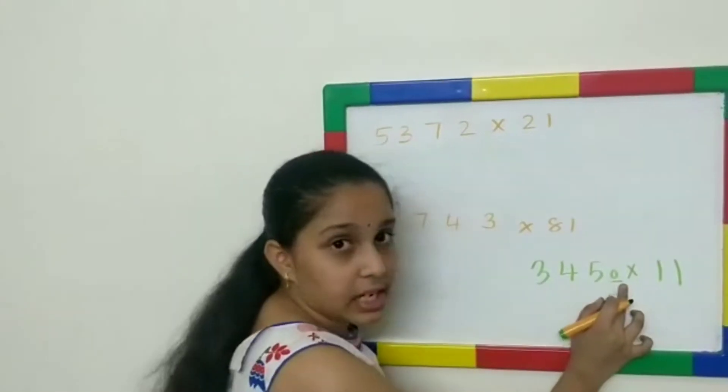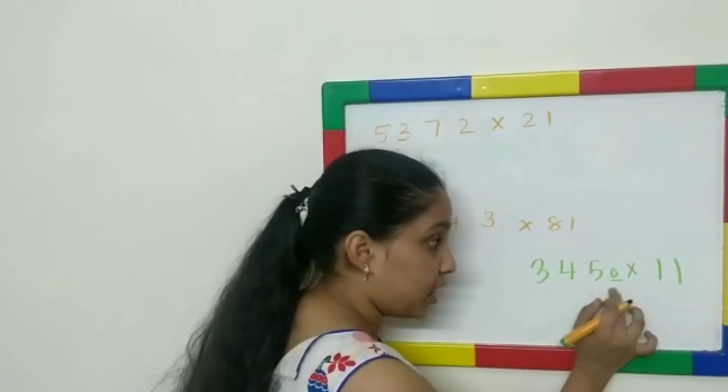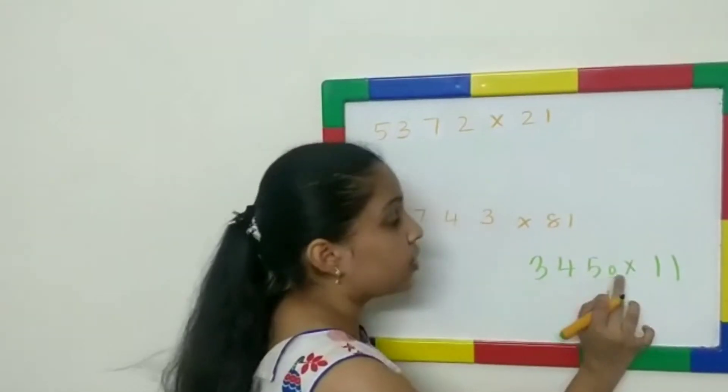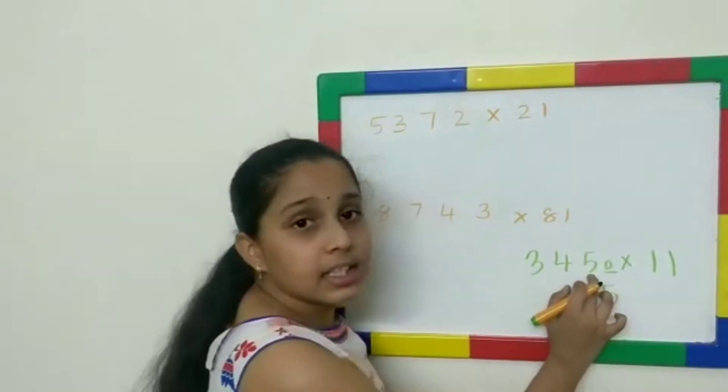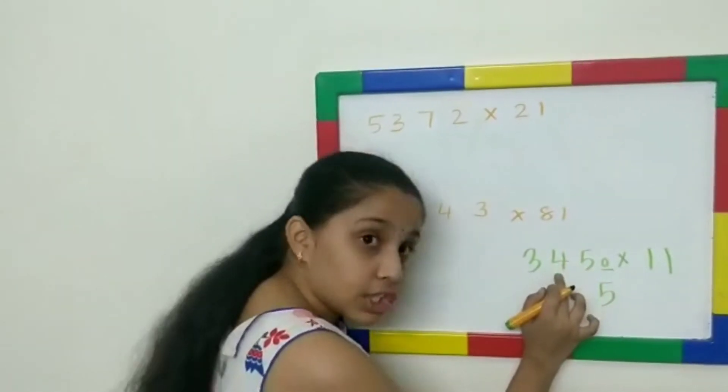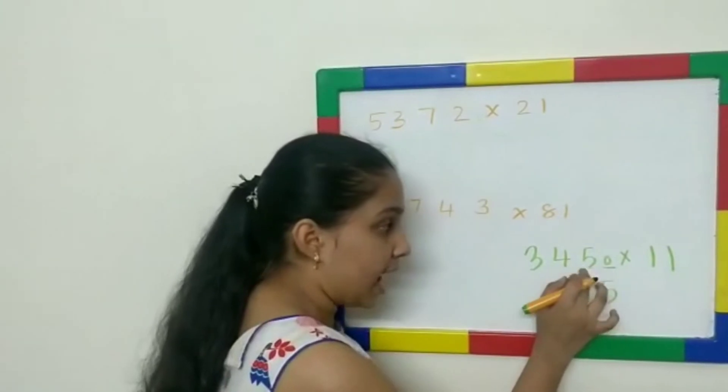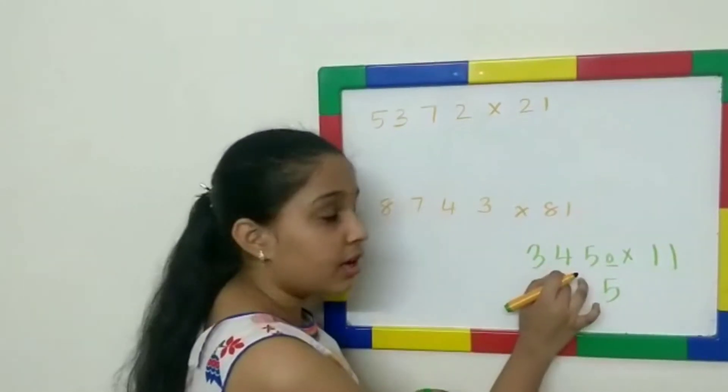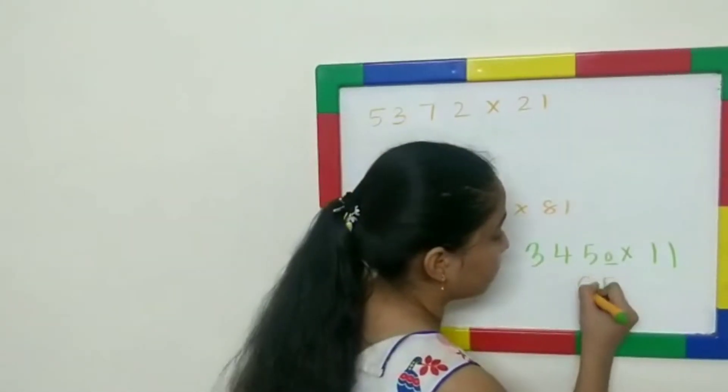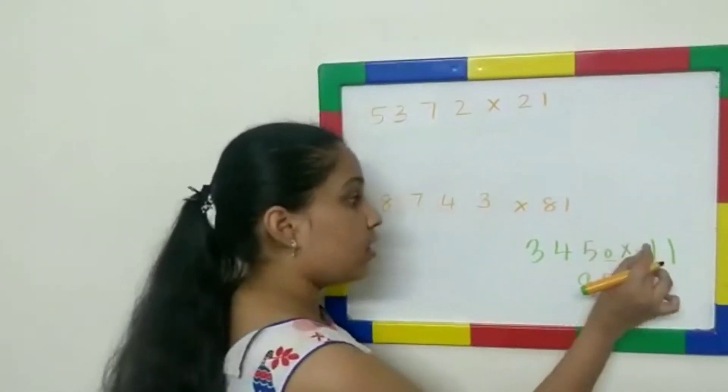Now, since 0 is done, we go with the next digit, that is 5. 1 multiplied by 5 is 5. 5 plus 4, so like we add it here, we're again going to add here. 5 plus 4 gives 9.